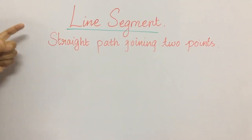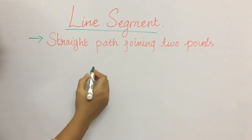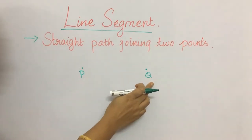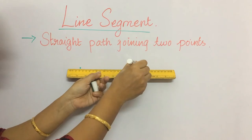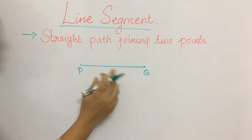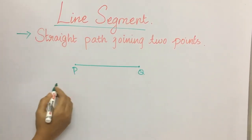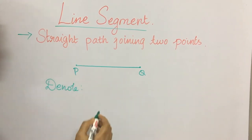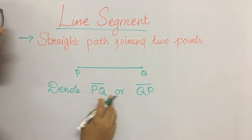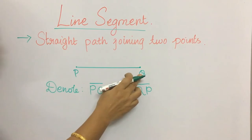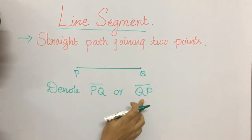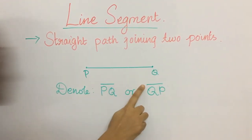Moving on to line segment — a line segment is a straight path joining two points. I am going to mark two points and name them P and Q. The straight line joining the two points is called the line segment. The length of the line segment is definite, which means we can measure the distance from P to Q. We can denote it as PQ bar or QP bar — we can represent it either way because P or Q can each be the starting point. These lines on top represent line segment.